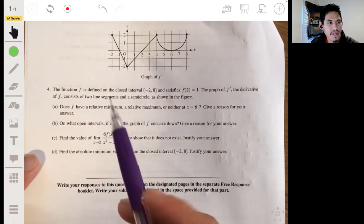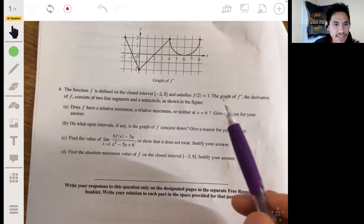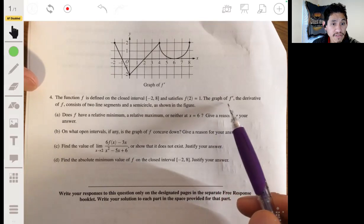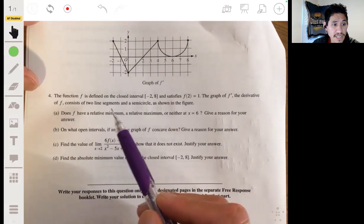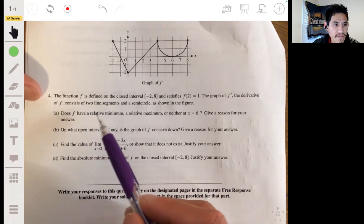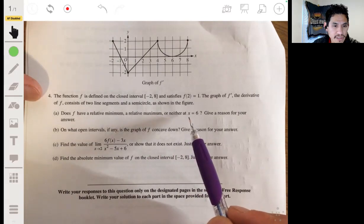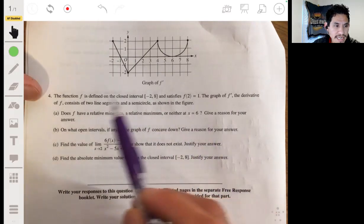So we got a function f defined on the closed interval negative two to eight, satisfies f of two being one. The graph of f prime and the derivative of f consists of two line segments and a semicircle. Part A, does f have a relative minimum, a relative maximum, or neither at x equals six? Give a reason for your answer.